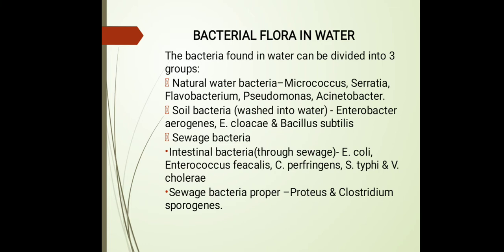Sewage bacteria can be divided into two categories: intestinal bacteria and other organisms. Intestinal bacteria include Escherichia coli, Enterococcus faecalis, Clostridium perfringens, Salmonella typhi, and Vibrio cholerae. The other organisms include non-intestinal bacteria such as Proteus and Clostridium sporogenes. These are the bacterial flora present in water.